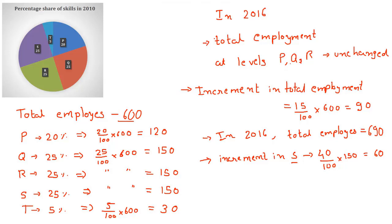At skill levels P, Q, and R, no new employees were employed, as the employment at these levels remained unchanged from 2010. So out of the newly added 90 employees, 60 were added at skill level S. Therefore, the remaining 30 were added at skill level T. So the increment in skill level T was 30.